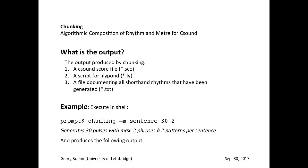Chunking produces three types of outputs. First, a CSound score file. Second, a script for Lilypond to render it into standard notation. And third, a list of all the shorthand rhythms that occur during the processing, saved as a text file.